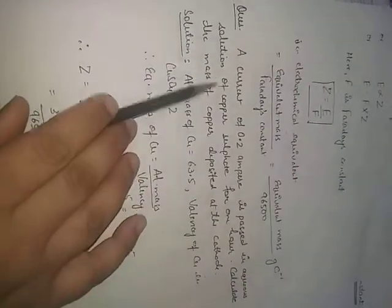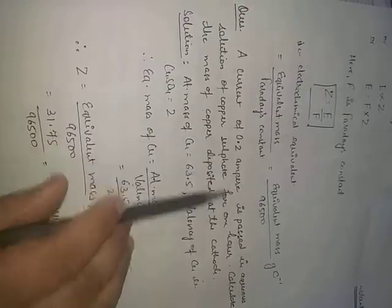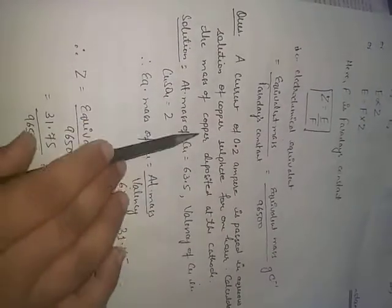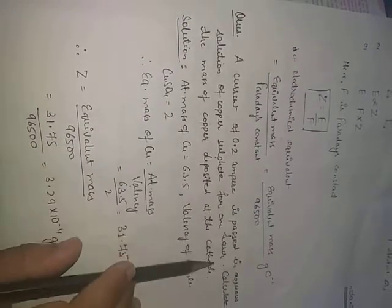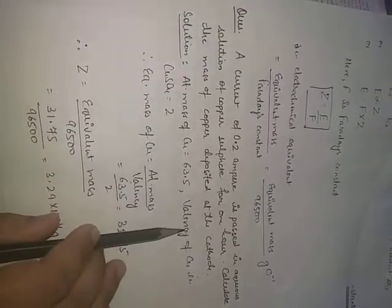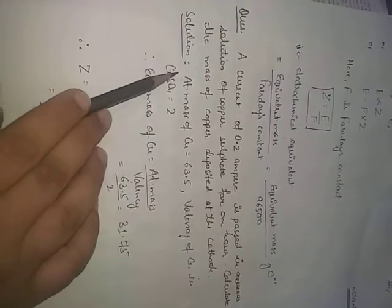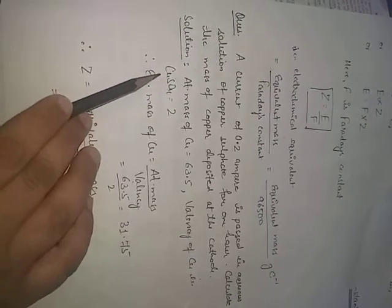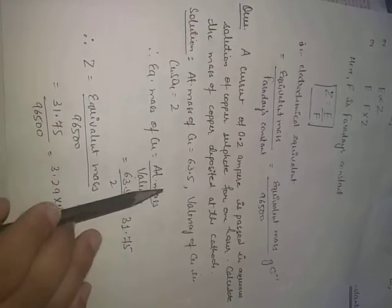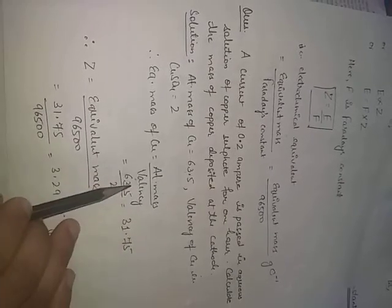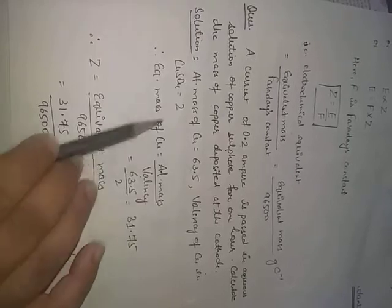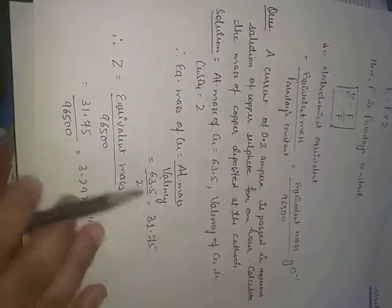Let's solve a numerical: a current of 0.2 ampere is passed through an aqueous solution of copper sulfate for one hour. Calculate the mass of copper deposited at the cathode. Given: atomic mass of copper = 63.5, valency of copper in CuSO₄ = 2. Equivalent mass = atomic mass / valency = 63.5 / 2 = 31.75.